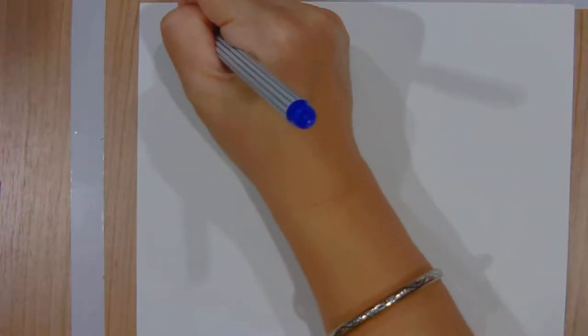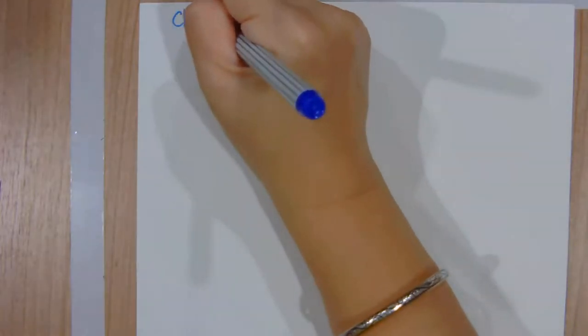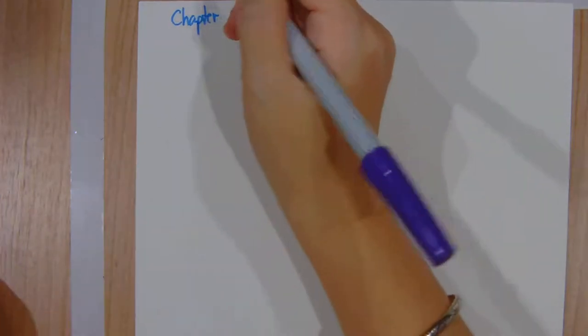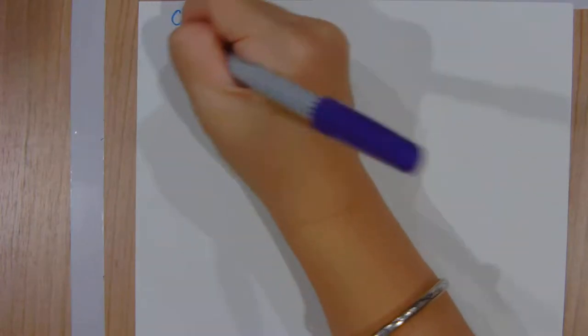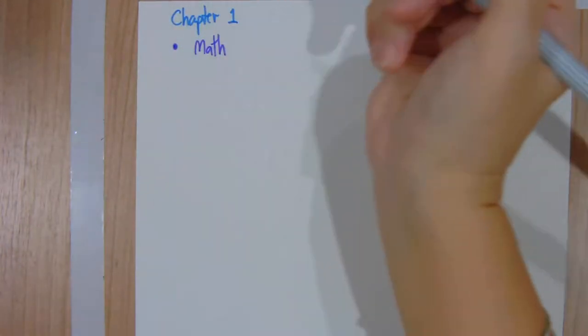Hi everyone. For the first episode, we will summarize all the content of chapters 1, 2, and 3. This is the content before the midterm exam. So let's start with chapter 1. In chapter 1, we will talk about three main contents. The first content is about mathematical inductions, or we call it mathematical induction.